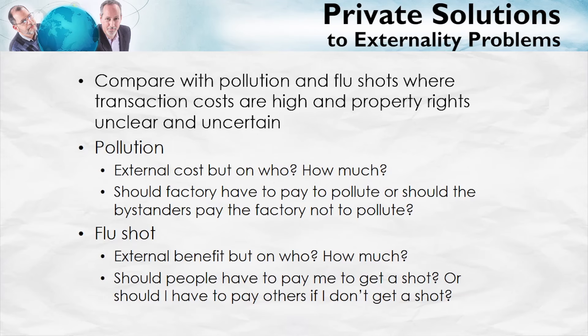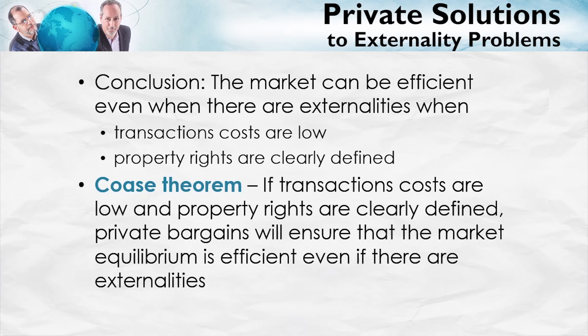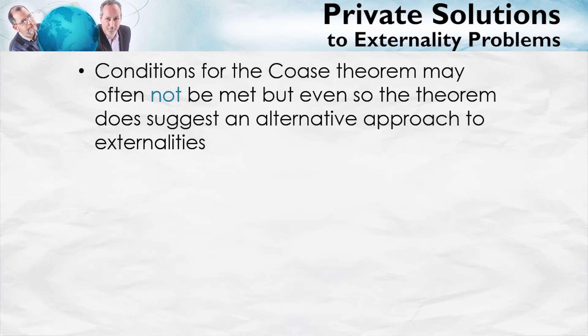And, therefore, the market isn't going to solve these types of externality problems very easily. So, the conclusion here is that the market can be efficient even when there are externalities, when transactions costs are low and when property rights are clearly defined. And, in fact, that's the Coase theorem. If transactions costs are low and property rights are clearly defined, private bargains will ensure that the market equilibrium is efficient even if there are externalities. The conditions for the Coase theorem to be met, low transactions costs and clear property rights, are in practice often not met.